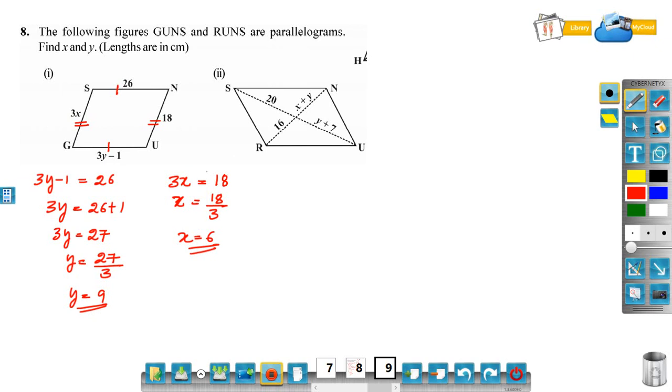Now see the second figure. Here the length of the parts of diagonals are given. 20 and y plus 7 are the parts of diagonal SU. 16 and x plus y are the parts of diagonal RN.